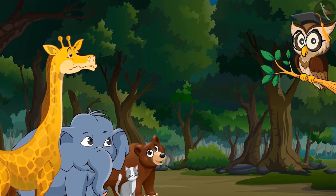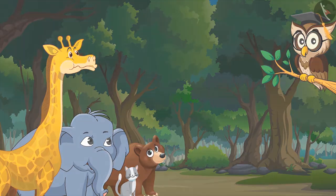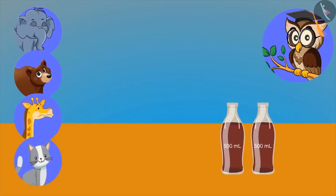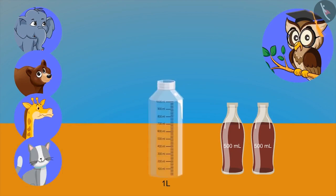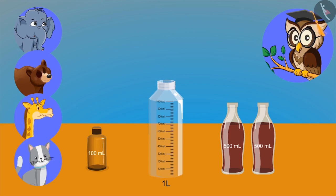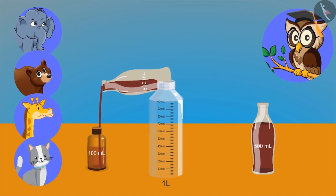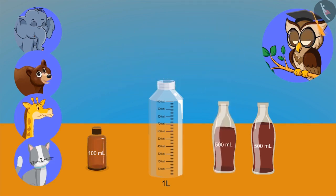Very good, kids! Sir, please show some more examples. Look, I have two bottles of cold drink and these empty bottles of 1 liter and 100 milliliter. Now you try to pour this cold drink into this empty bottle. We cannot put 500 ml in a 100 milliliter bottle.